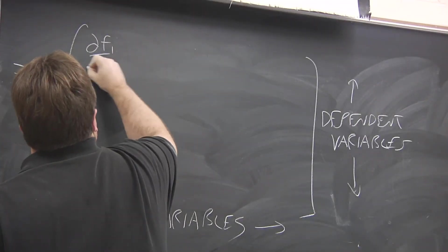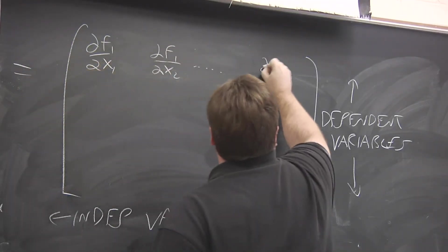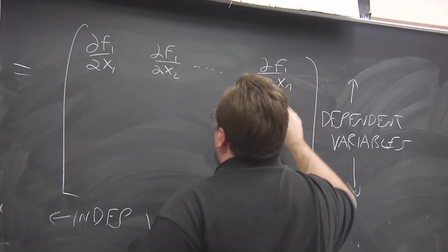So you're going to have partial of F₁ with respect to x₁, partial of F₁ with respect to x₂, and so on, all the way out to xₙ.